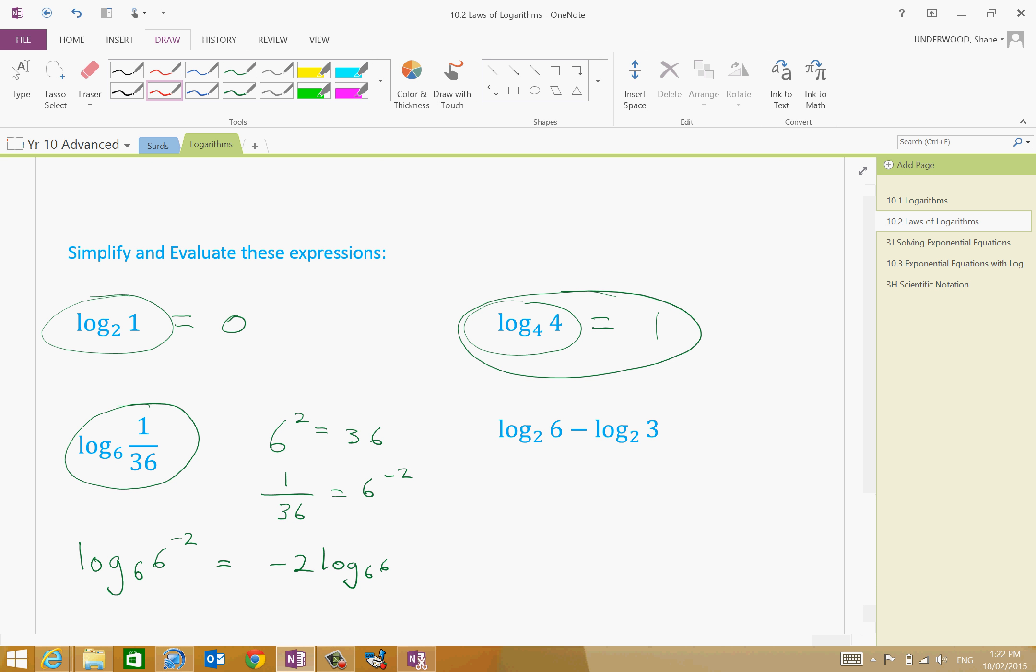So, let's do that. Negative 2 log to the base 6 of 6. Now, any logarithm of the same base and power, what does that equal? That equals 1. So, it evaluates to be negative 2 times 1, which is equal to negative 2.